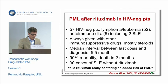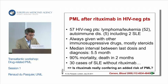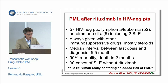Dr. Berger already alluded to this paper. In this paper, 57 HIV-negative patients with PML were reported. 52 of them had lymphoma or leukemia — well-known diseases associated with PML. Five had autoimmune disease, including two with SLE. But all these PML cases that occurred with rituximab exposure were always associated also with other immunosuppressive drugs, mostly steroids.